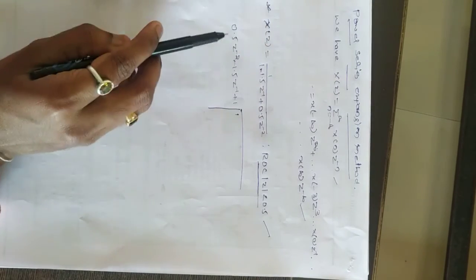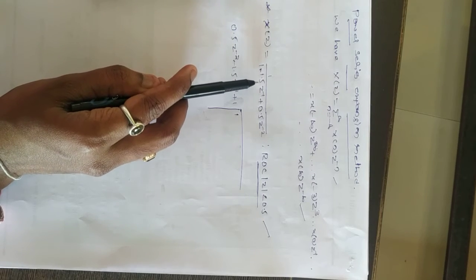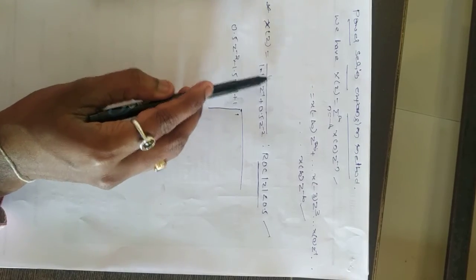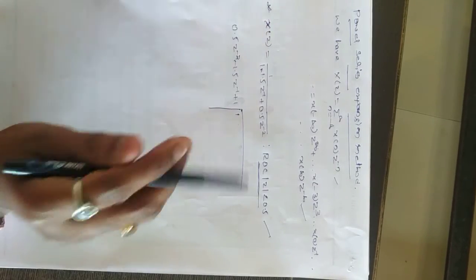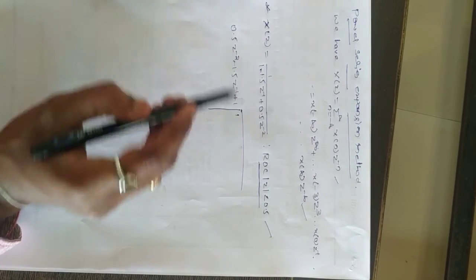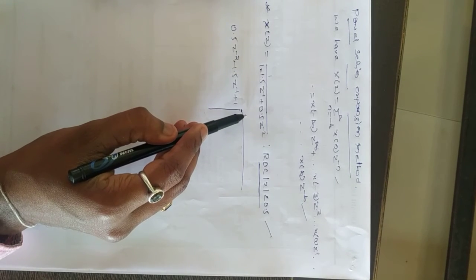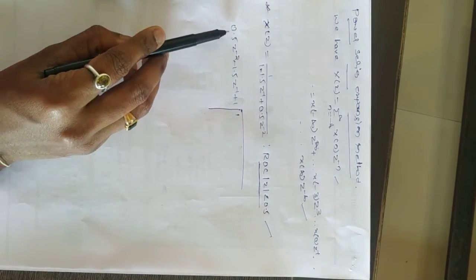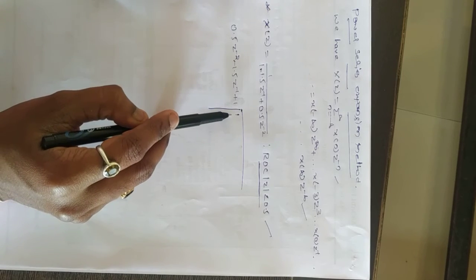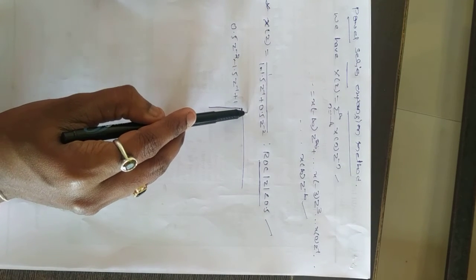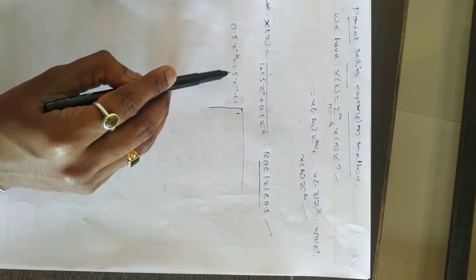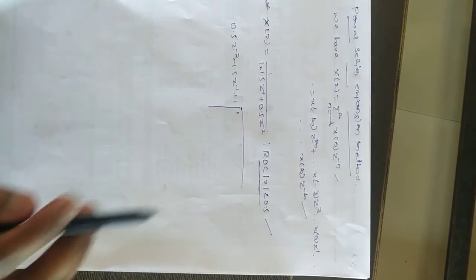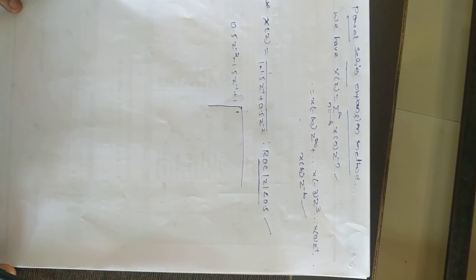The highest power should come first when the ROC indicates a left-sided sequence. Here, the highest power is 0.5z^(-2), next is -1.5z^(-1), and then 1. Write the numerator 1 inside the block. To get 0.5, calculate what should be multiplied — follow the same long division method, multiplying 1.5 with the remaining values. This is the power series expansion method. Thank you.